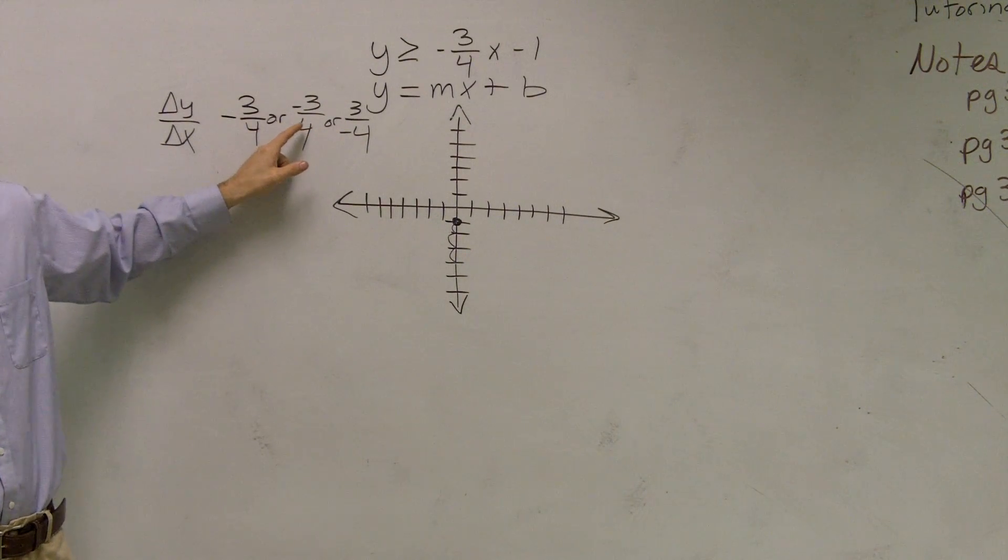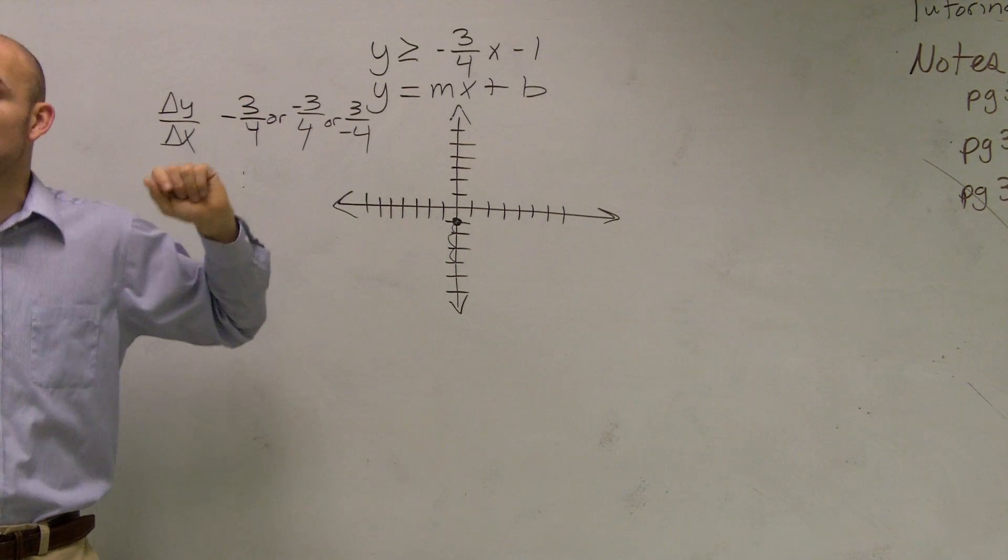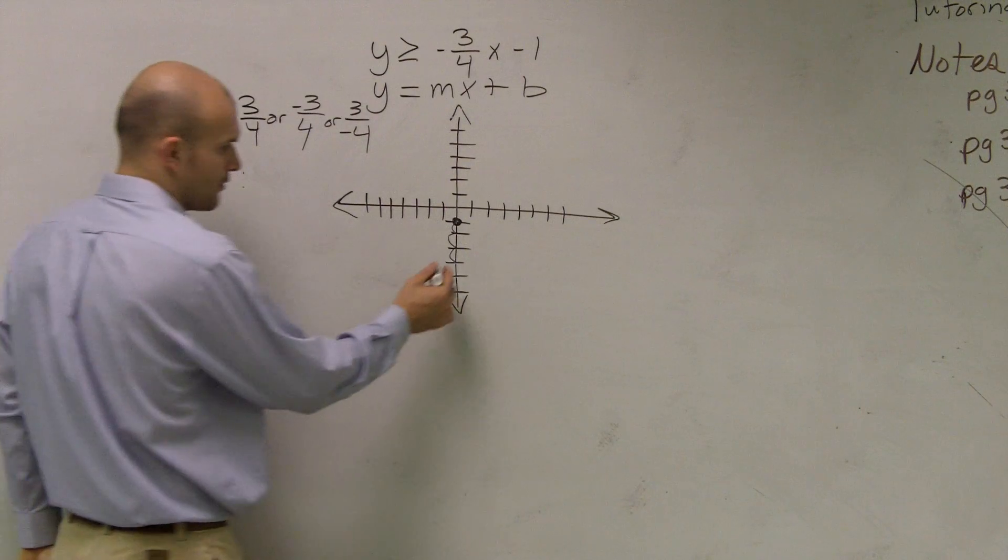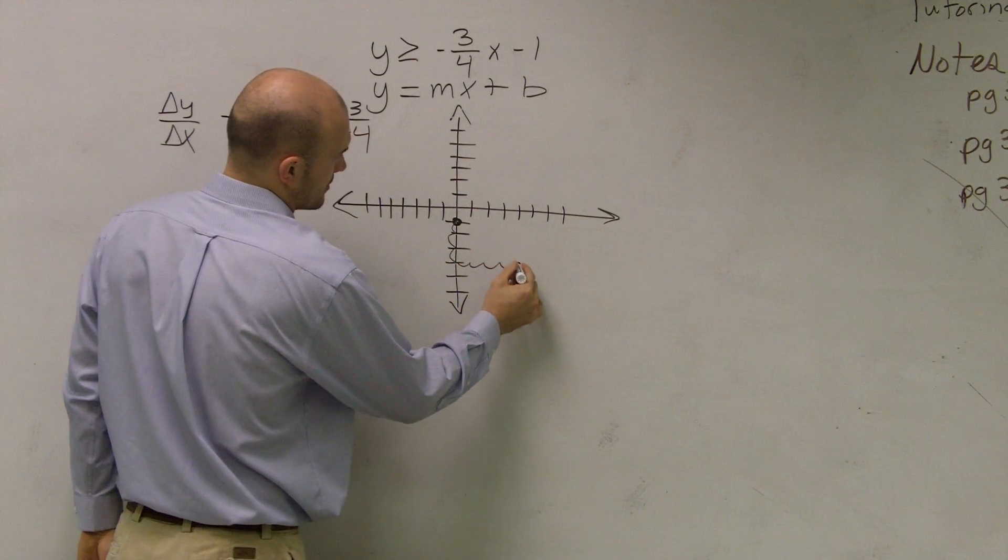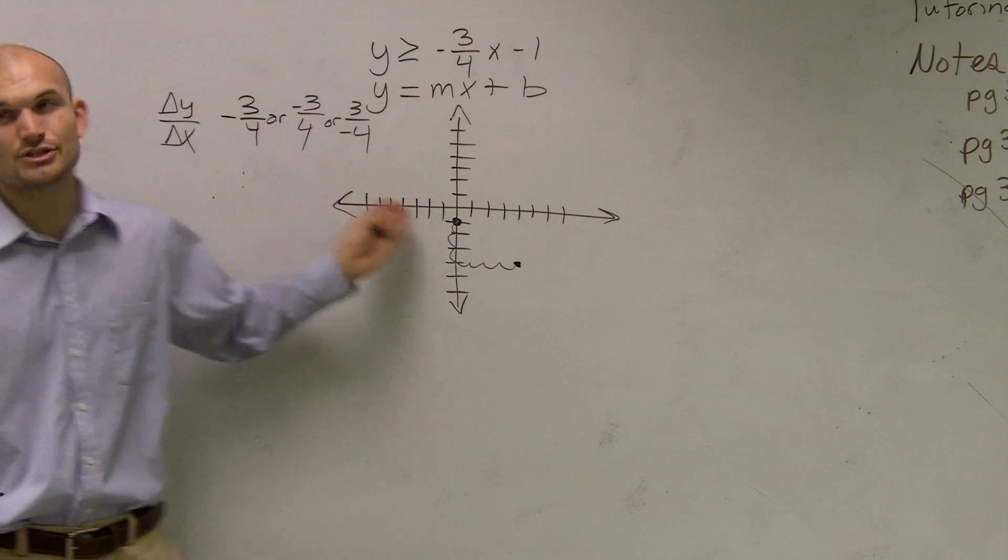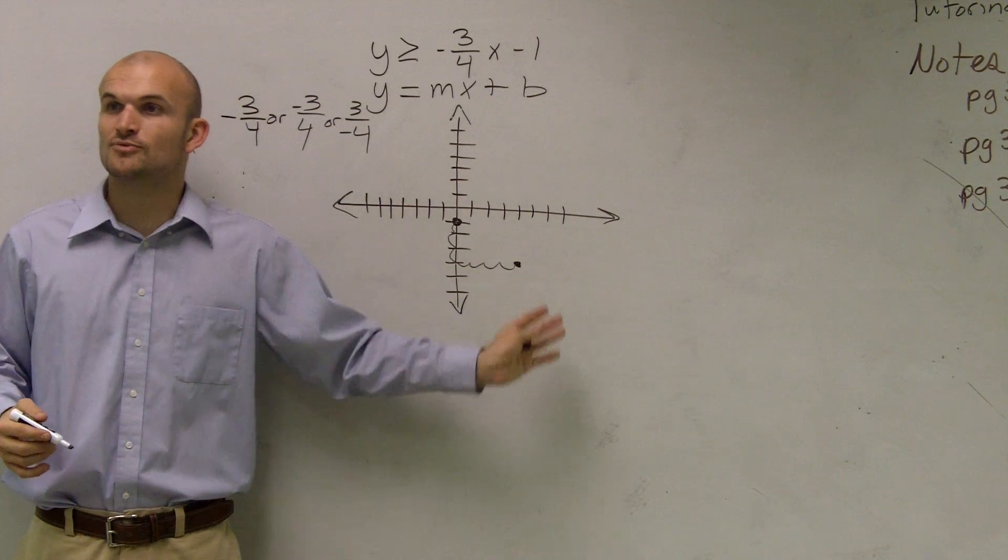Then the change in my x coordinate is 4. Is that going to tell me to go right or to the left? To the right, 4 units. 1, 2, 3, 4. Okay? Now you can easily draw a line between these two points.